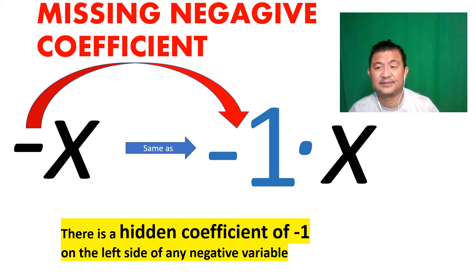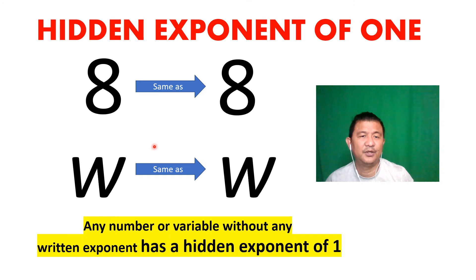One more: a hidden exponent. I don't see an exponent here, there's nothing, so maybe it's zero? No, it's not zero. There is always a hidden exponent of one.